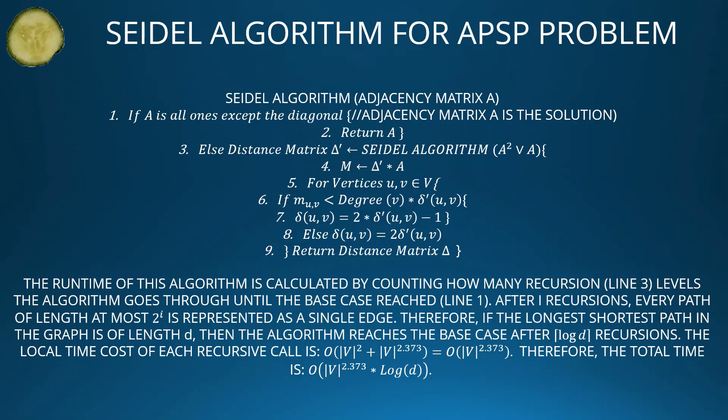The runtime is calculated by counting recursion levels until the base case. After i recursions, every path of length at most 2^i is represented as a single edge. Therefore, if the longest shortest path (diameter) is D, the algorithm reaches the base case after ⌈log D⌉ recursions. The local time cost of each recursive call is O(n² + n^2.373) = O(n^2.373), so the total time is O(n^2.373 · log D).